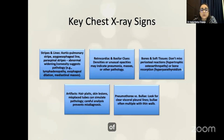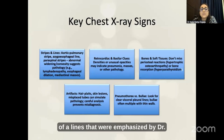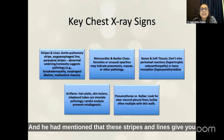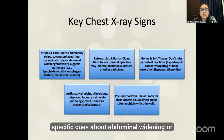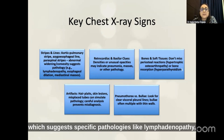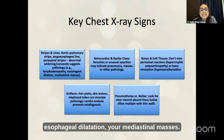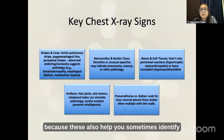Key chest X-ray signs — Dr. Sanjay Jain mentioned that mediastinal stripes and lines give specific cues about mediastinal widening or convexity, suggesting specific pathologies like lymphadenopathy, esophageal dilatation, or mediastinal masses. Do not forget about the retrocardiac and basilar cues because these also help identify pneumonias, masses, or other pathologies.